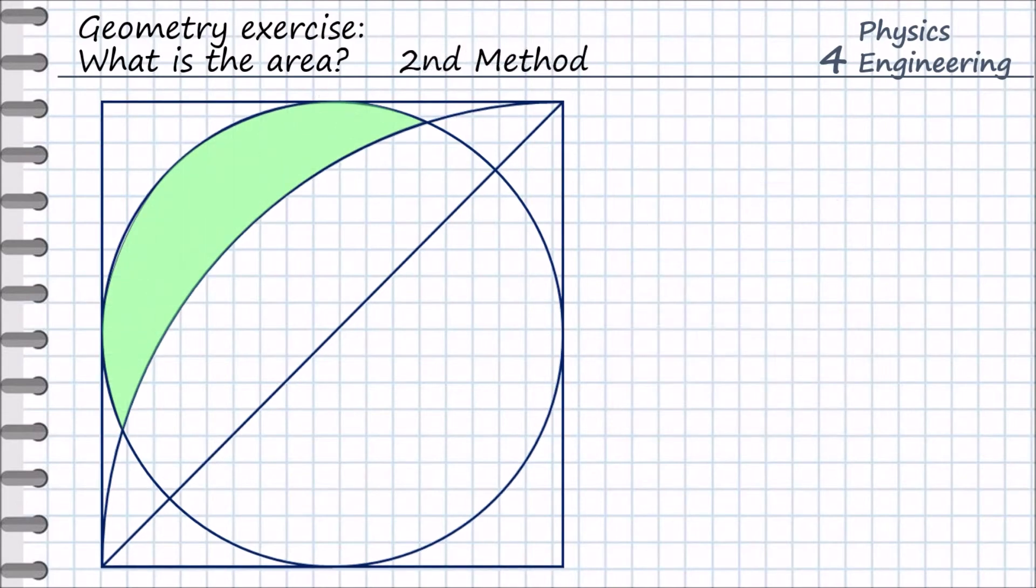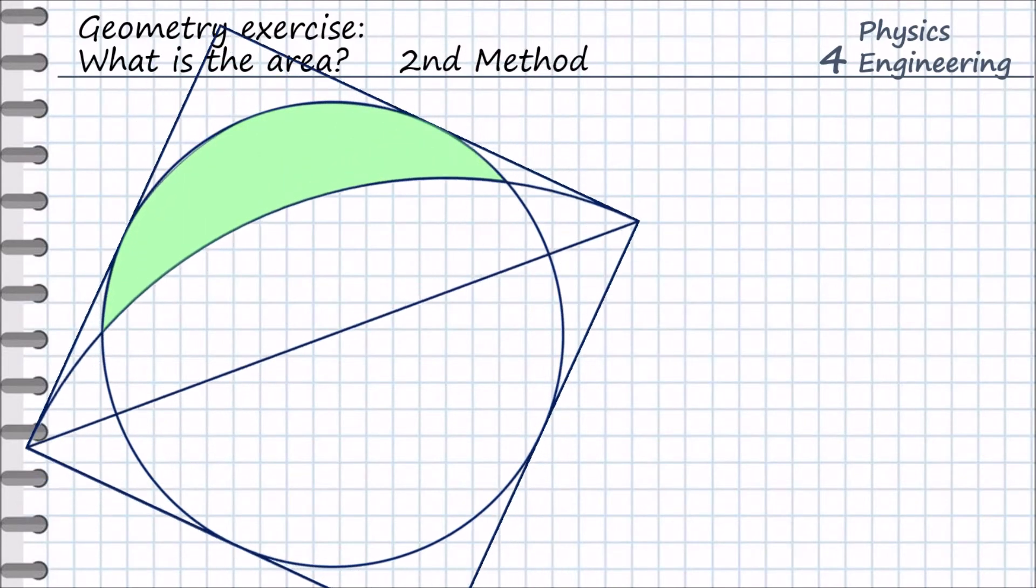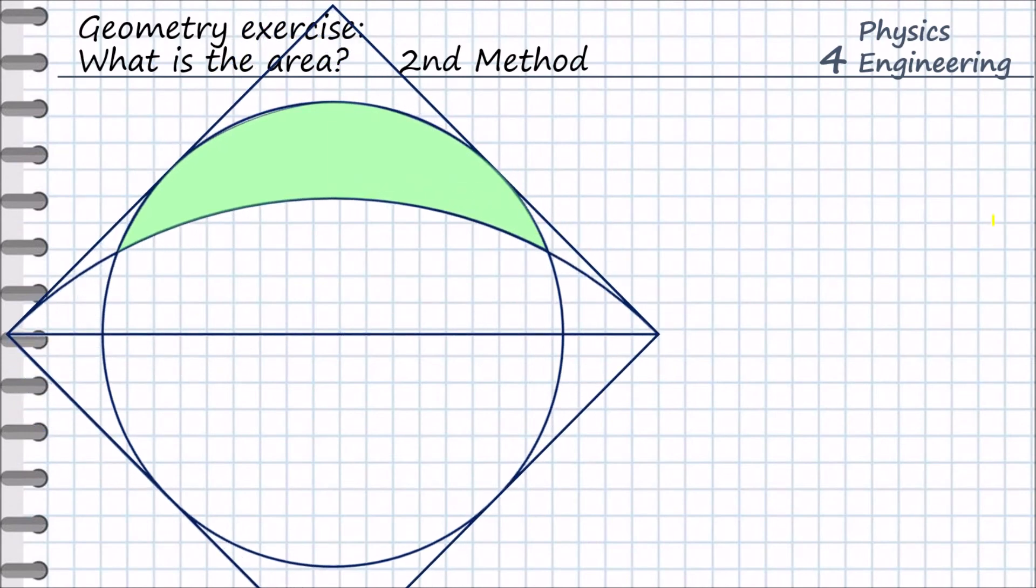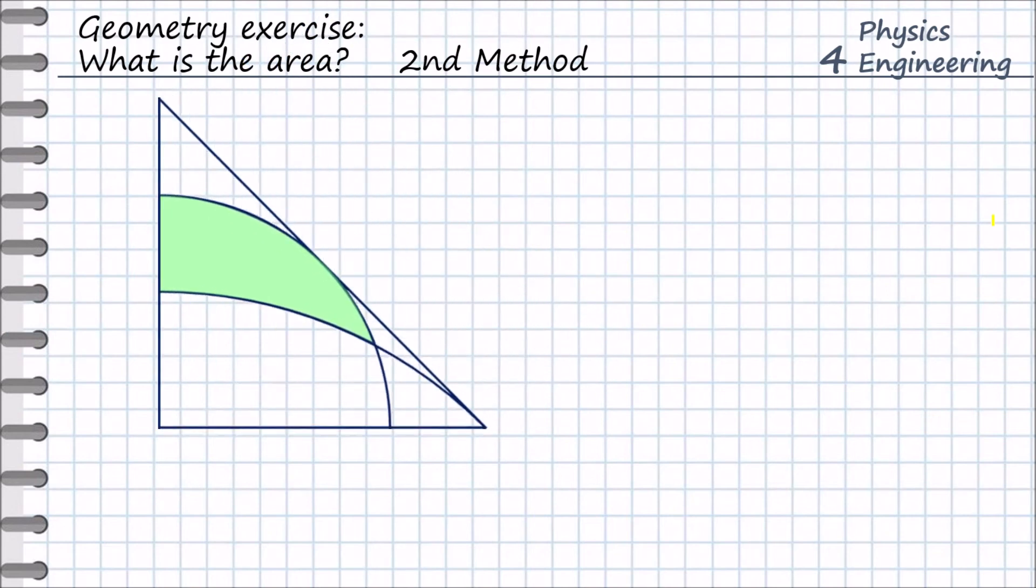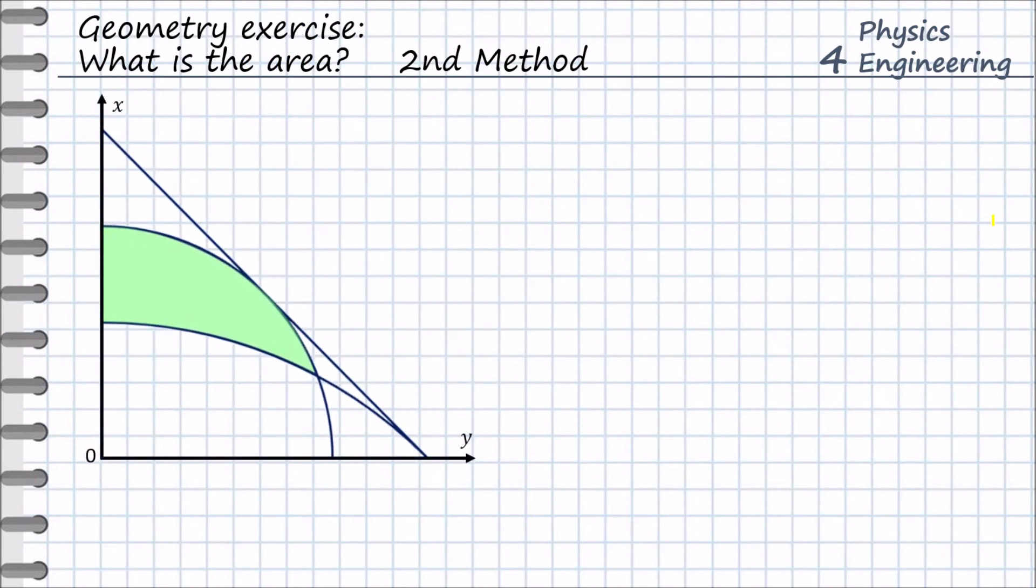We move now to the second method. We use integrals to find this area. We turn our geometrical shape 45 degrees, then we take the quarter of it, and then we define the coordinate system.